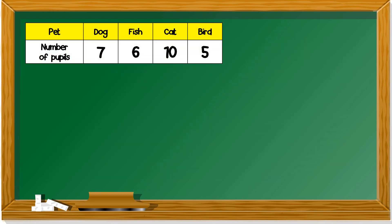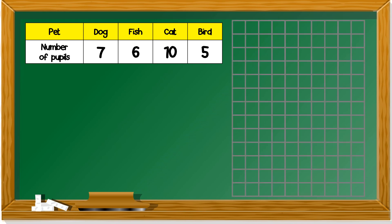From the table, we have gotten just now. For dog, there are seven people, right? For fish, six. Cat, ten. And bird, five. So, we put it into a chart like this.